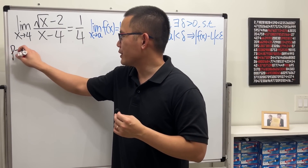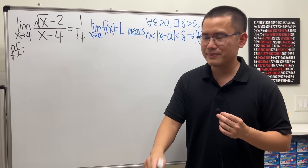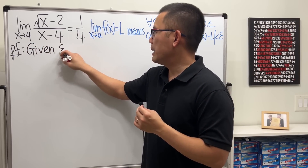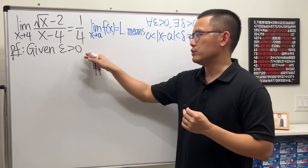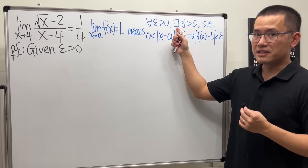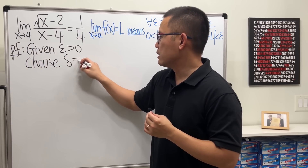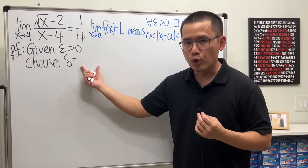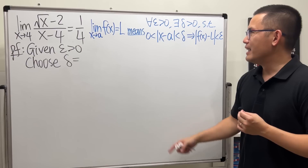We start by writing down 'proof,' and here are the four keywords: given, choose, suppose, check. When you see 'for all,' you start by saying 'given epsilon greater than zero.' If your instructor wants you to write 'given epsilon greater than zero to be arbitrary,' then write that; otherwise just 'given epsilon greater than zero' is fine. Next, 'choose' is for the 'there exists' part — you want to specifically write down what delta is going to be. A lot of people get stuck because they don't know what delta is. That's okay — just leave it for now and come back once we figure it out.